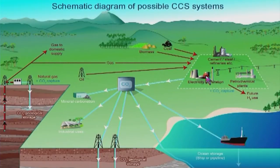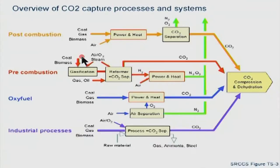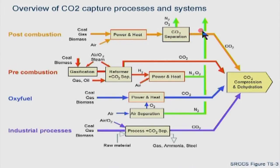This concept shows the different components. The first component is capture or separating. For post-combustion capture: we burn coal in air and produce flue gases containing nitrogen, oxygen, and CO2. Using technology to separate CO2 from other gases, we compress it and store it underground. We have absorption and adsorption-based technologies available, many even on a commercial scale.